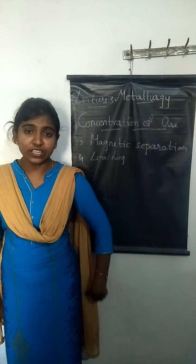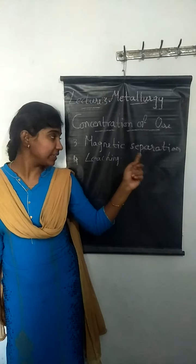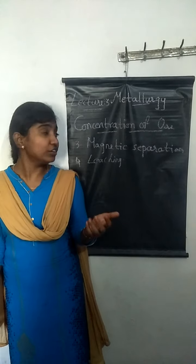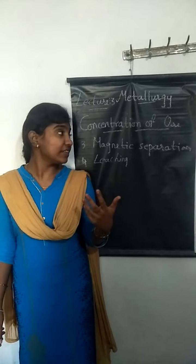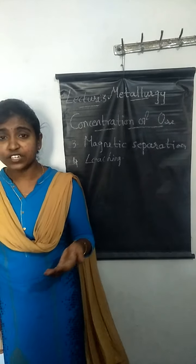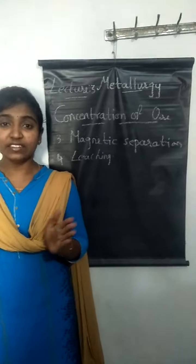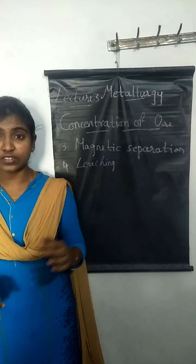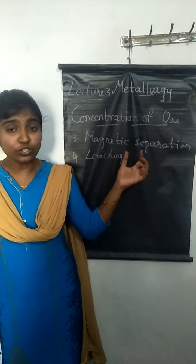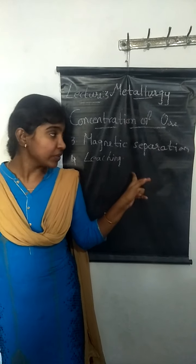In lecture 3 of metallurgy, we will be discussing concentration of ore by magnetic separation and leaching. In lecture 2 we covered hydraulic washing and froth flotation. Concentration of ore is the process of removing or separating the gangue particles from the ore particles. It is also called ore dressing or benefaction. The two remaining methods are magnetic separation and leaching.